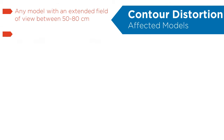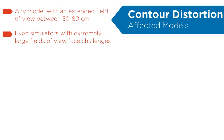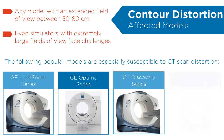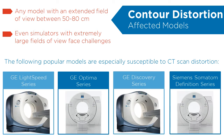Given that most CT simulators have extended fields of view starting at about 50cm, obese cancer patients cannot be imaged and treated accurately. With obesity on the rise, even some of the larger scanners will face challenges. These popular CT simulators are especially susceptible to CT scan distortion.